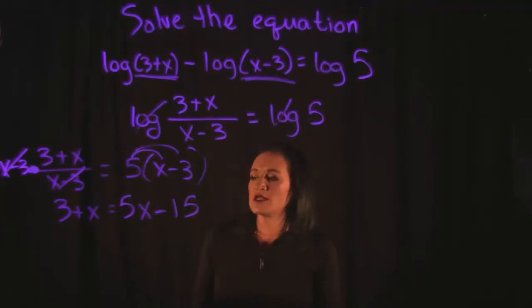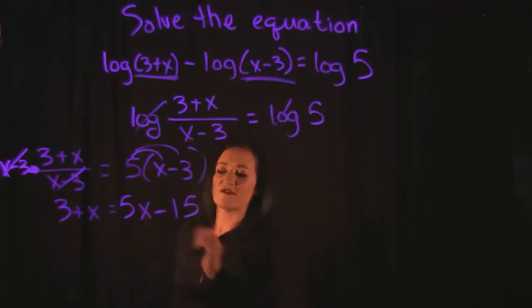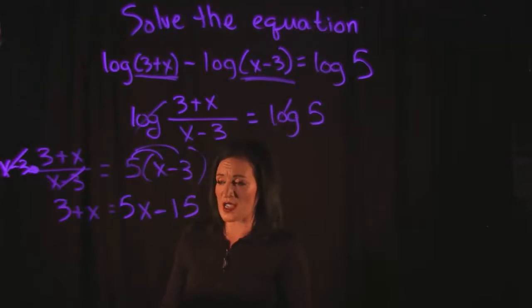So from here on out, let's see. I want to get my X's together. I essentially want to combine my variables, I want to combine my numbers. If I combine my variables, I have an X here on the left hand side, I have a 5X on the right hand side, so I'm going to combine them all together on the right hand side.